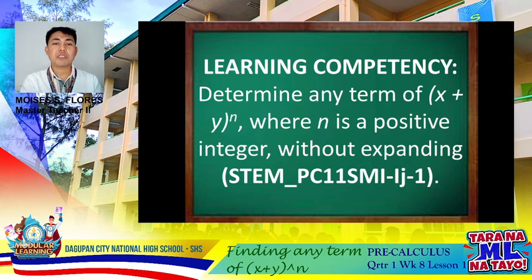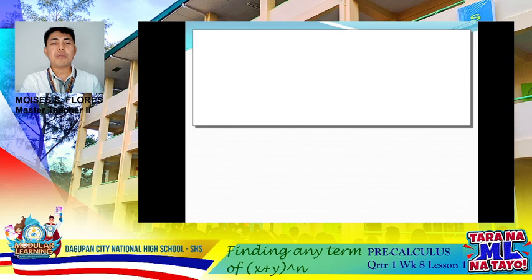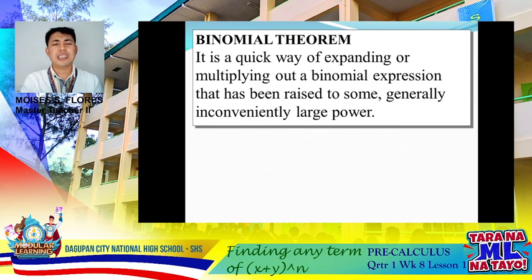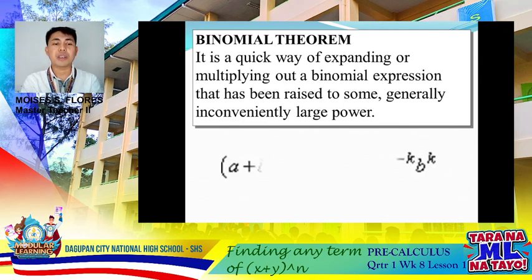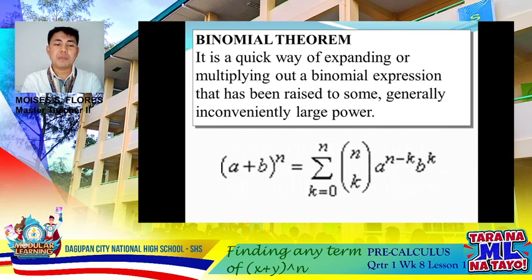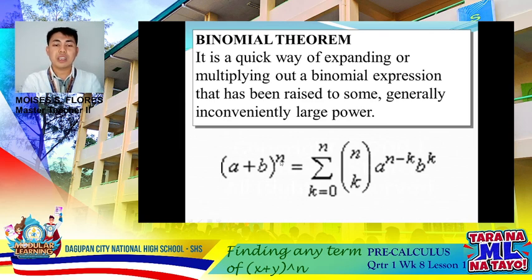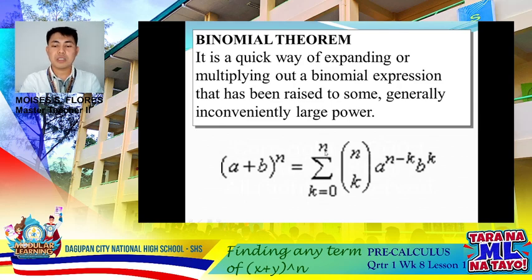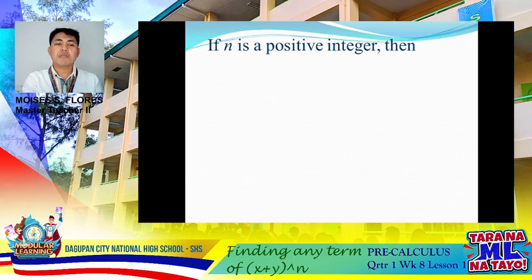Where n is a positive integer, without expanding. So take note — we are not to expand with respect to our given binomial. Binomial theorem: it is said to be the very quick way of expanding or multiplying out a binomial expression that has been raised to a conveniently large power. We have here the working formula: (a plus b) raised to n, where n is our exponent, and we are given the summation with respect to n and k, where a is raised to n minus k and b is raised to k, as k goes from 0 to n.